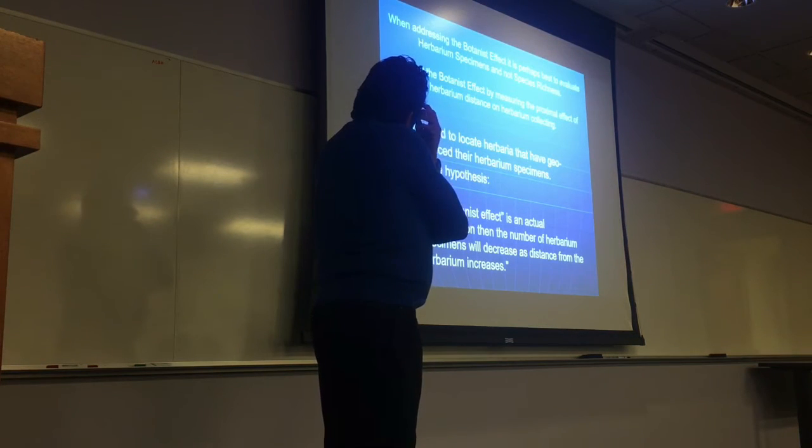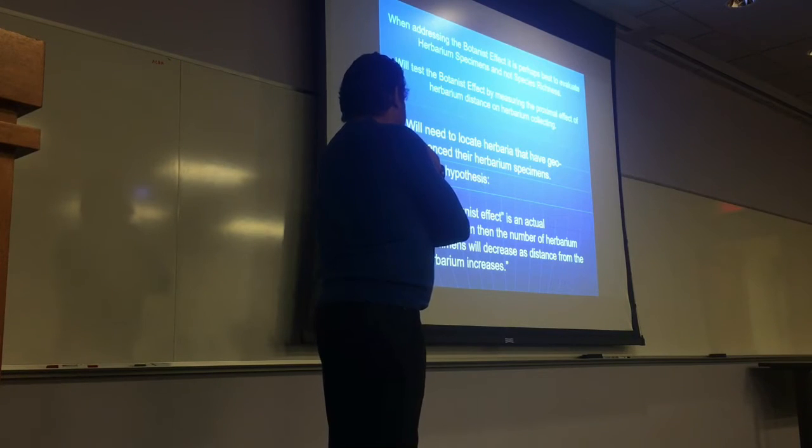So when addressing the botanist effect, it is perhaps best to evaluate herbarium specimens and not species richness. So what I want to test here is the botanist effect by measuring the proximal effect of herbarium distance on herbarium collecting. So I did it to locate herbarium that had georeferenced herbarium specimens. In order to test my hypothesis, if the botanist effect is an actual phenomenon, then the number of herbarium specimens should decrease from distance from, as a distance from an herbarium increases.